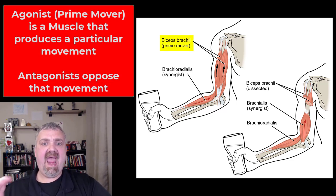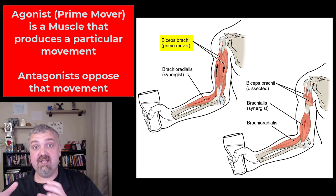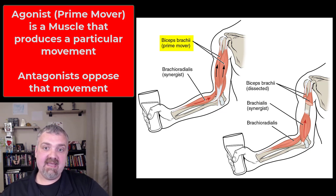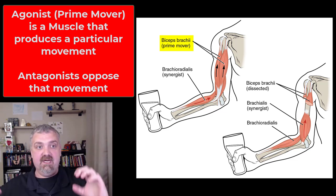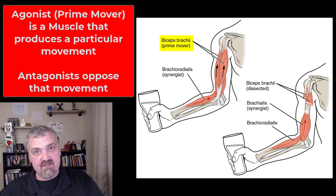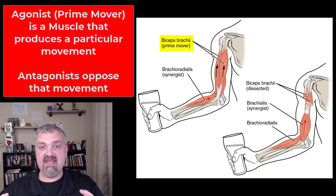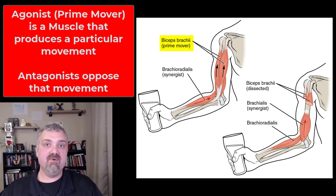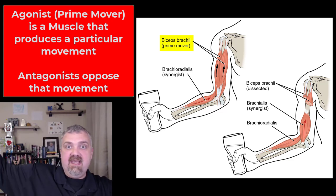Muscles are either going to be an agonist — the agonist or prime mover when it comes to elbow flexion is the biceps brachii. The agonist is the muscle that produces a particular movement. Muscles then have an antagonist — any muscle that opposes that movement. For smooth movement, for me to flex my elbow, it's just as important that the elbow extensors like the triceps relax as it is that the elbow flexors like the biceps contract. The antagonist to the biceps is the triceps because the triceps extends the elbow.